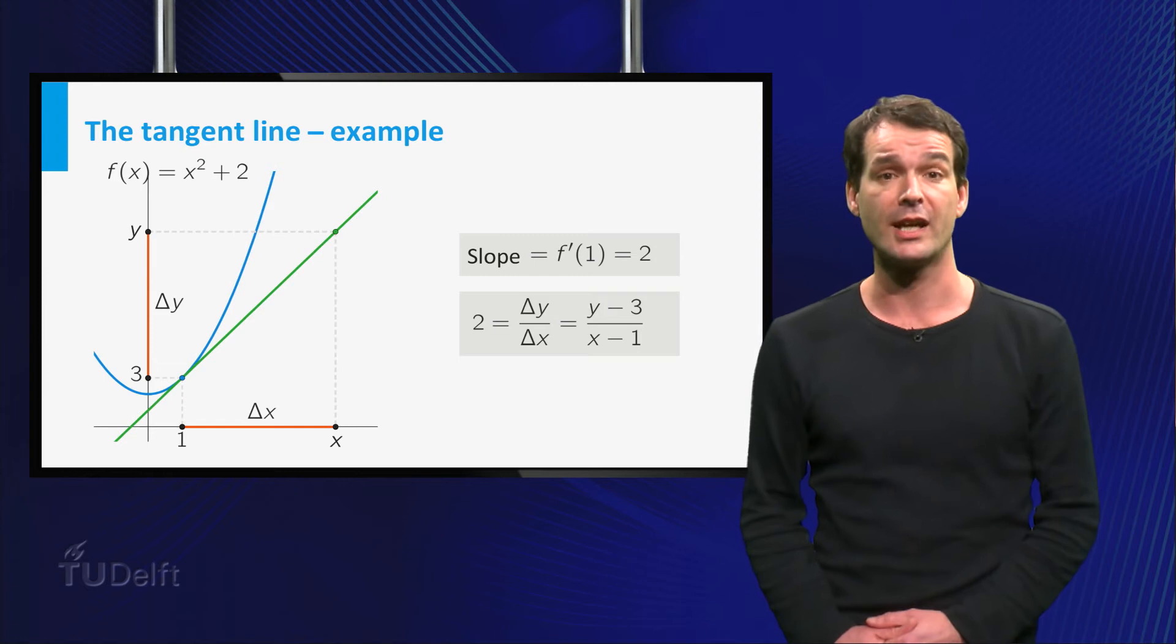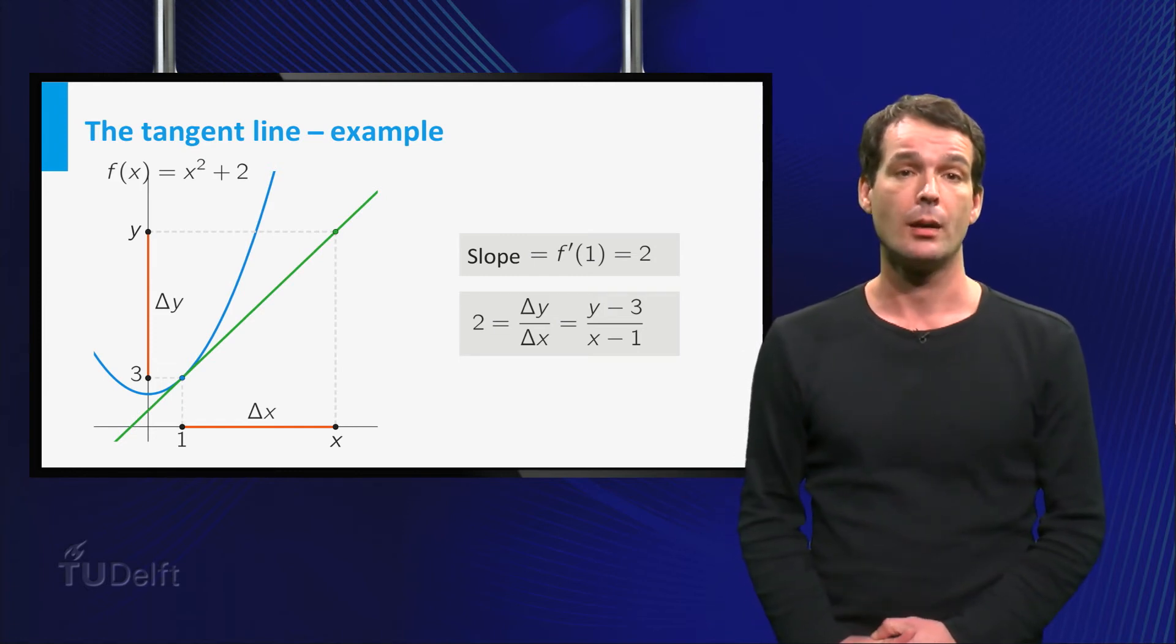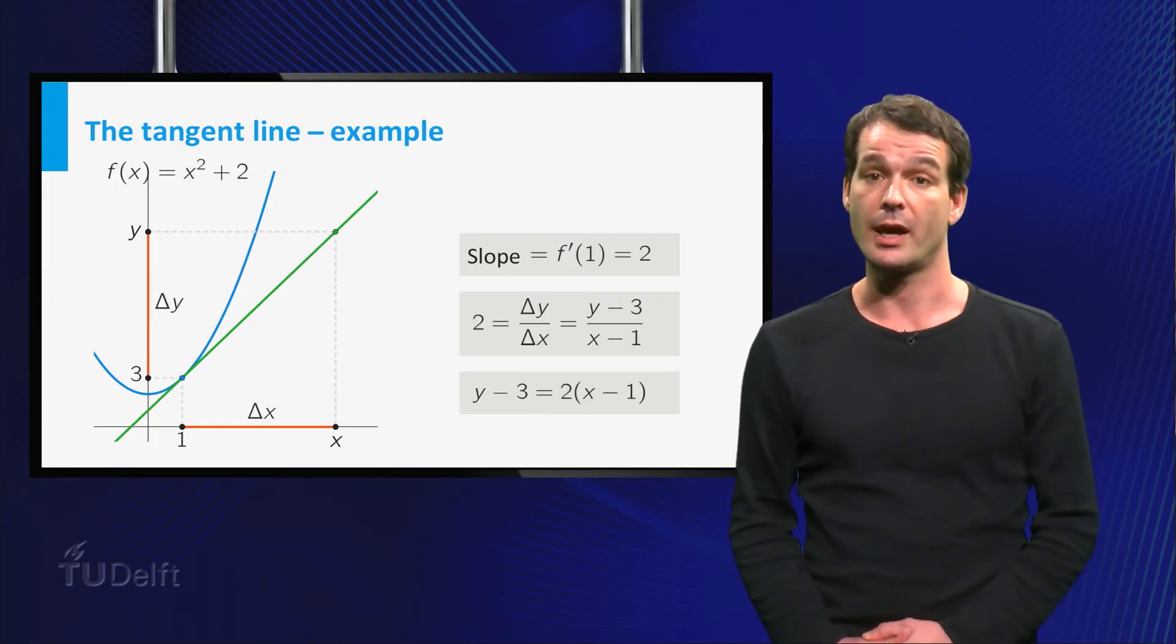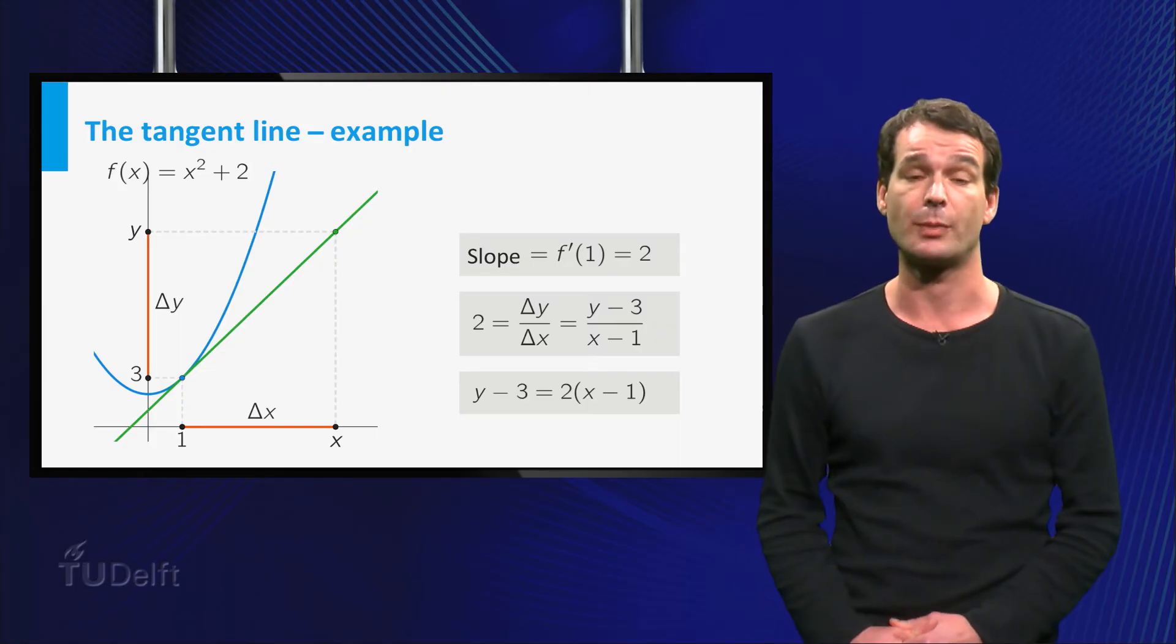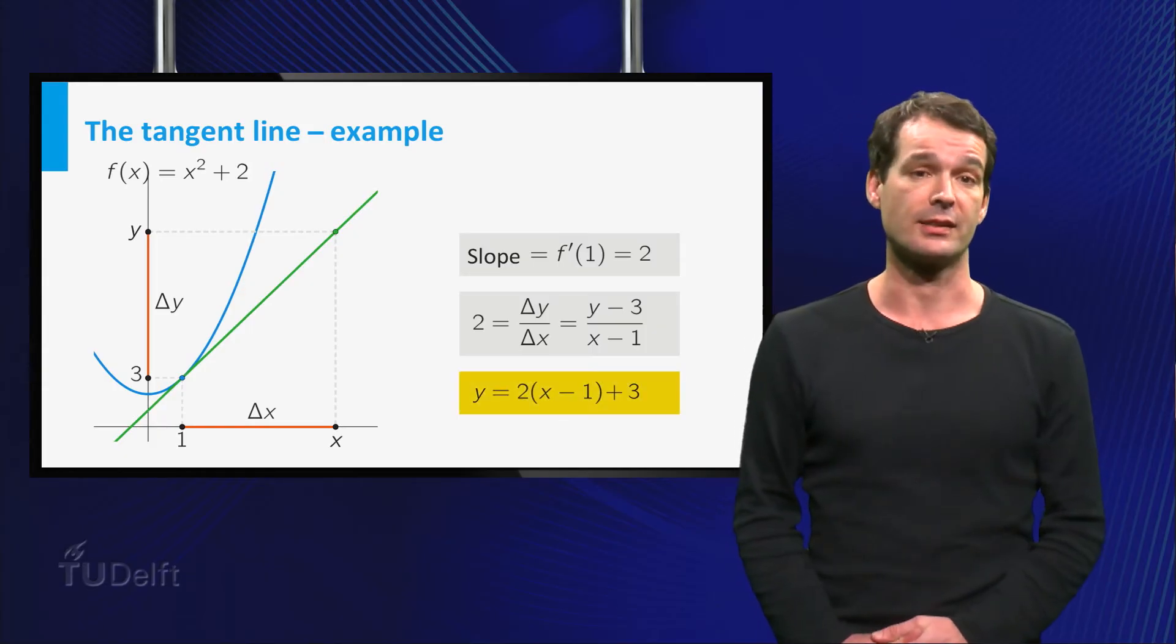So we obtain the relation between x and y. We will solve for y. Multiply both sides of this equation by x minus 1. Then we have y minus 3 is 2 times x minus 1. And finally we bring 3 to the other side. And there it is, the equation of the tangent line.